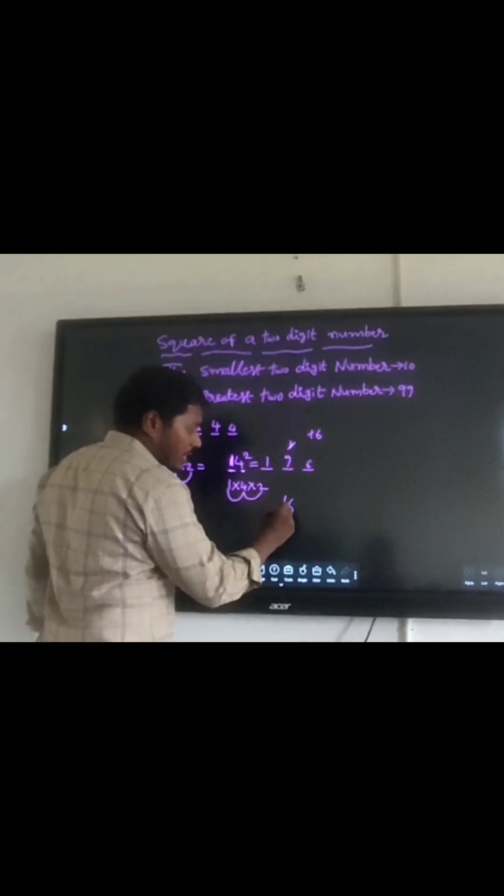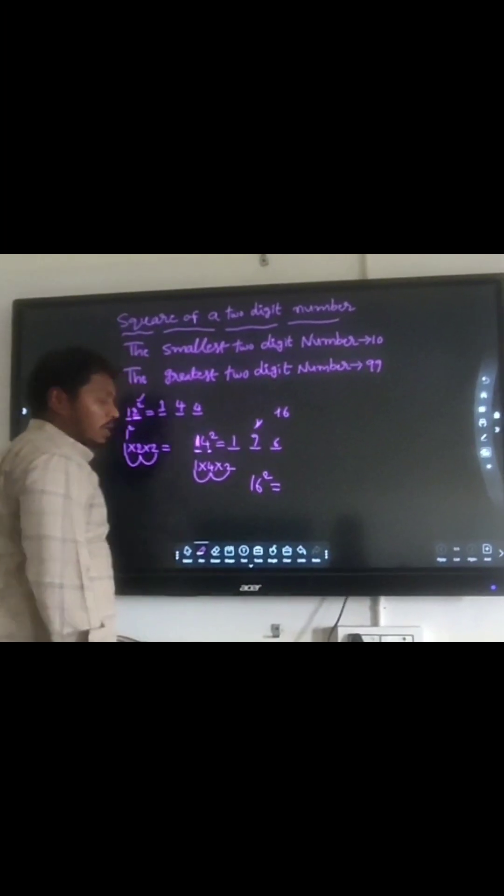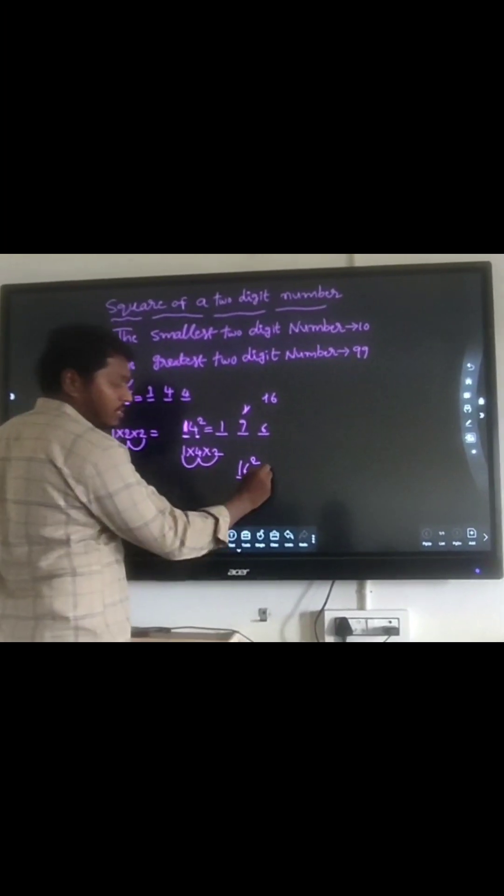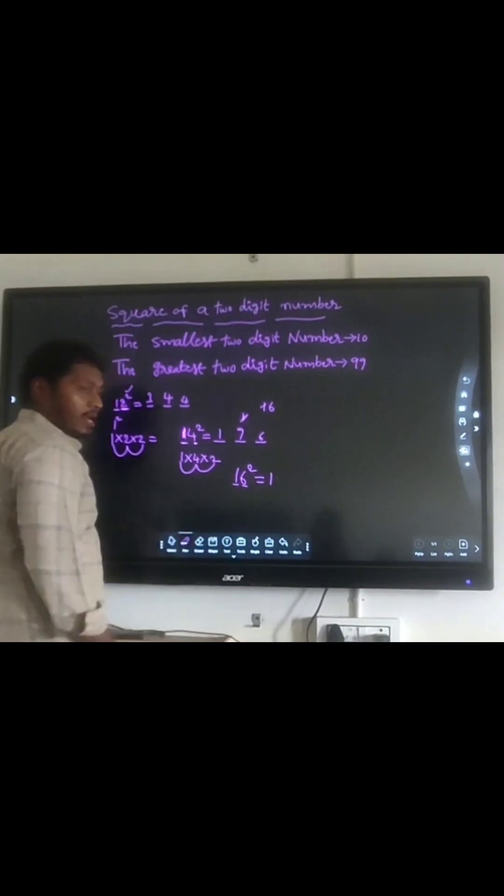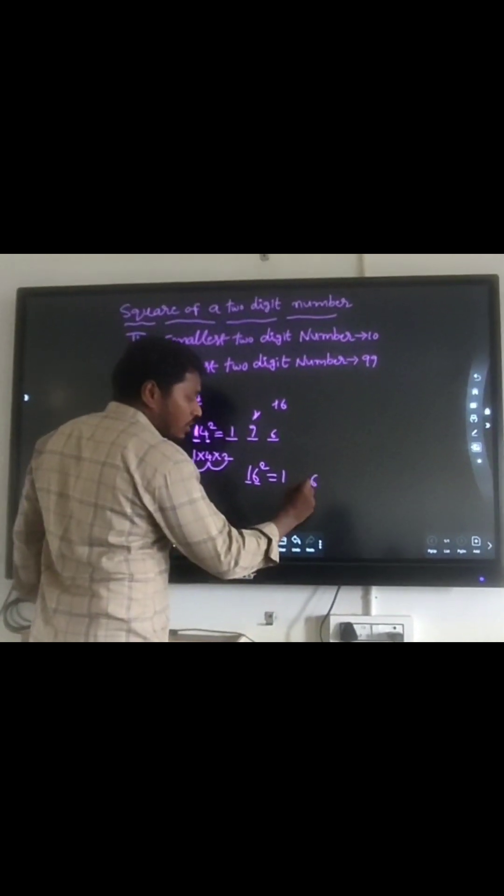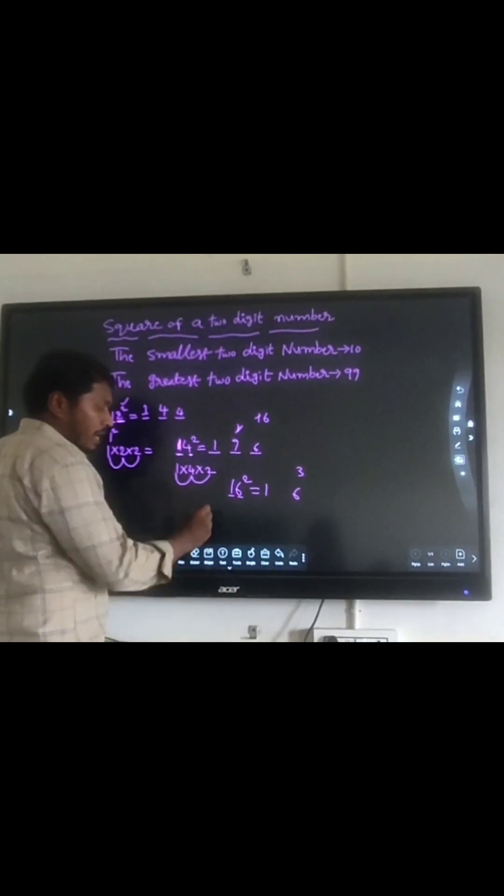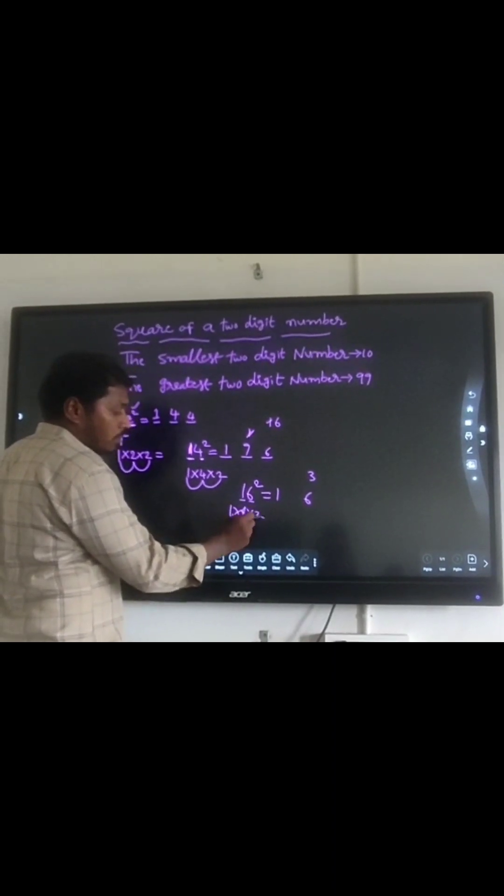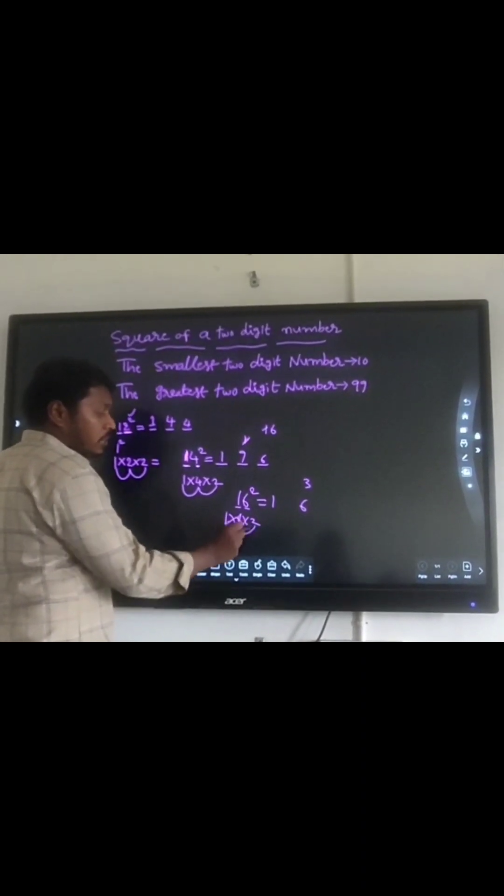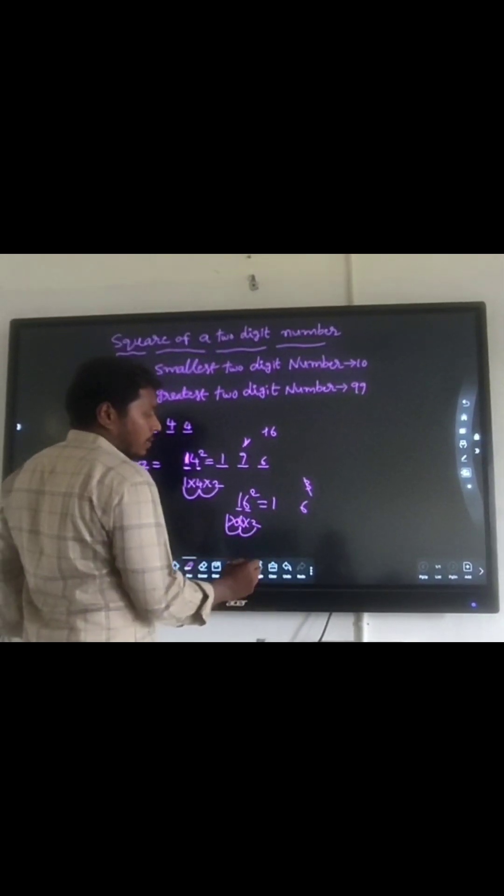Next, 16 square. 1 square is 1. Next, 6 square is 36, so 6 is written and 3 is carried forward. Next, 1 into 6 into 2. 1 times 6 is 6, times 2 is 12, plus 3 equals 15.